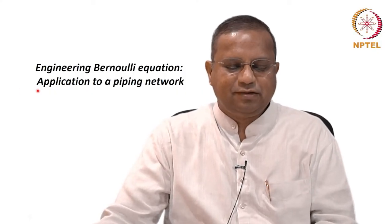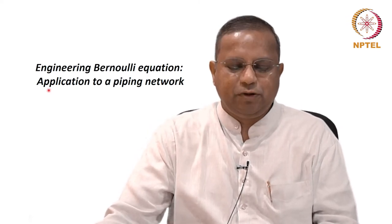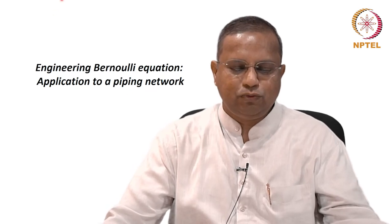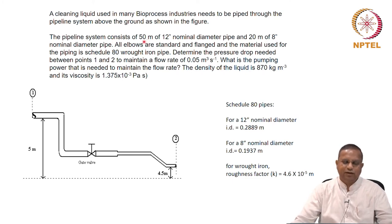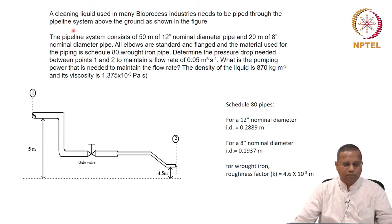Welcome. Let us look at the application of the engineering Bernoulli equation to a piping network in this class, and we are going to do that through an actual problem. Let me state the problem first and then tell you how to go about solving it — it is just an application of the Bernoulli equation with associated aspects, and you will be able to pick up how to use the engineering Bernoulli equation in the piping network situation.